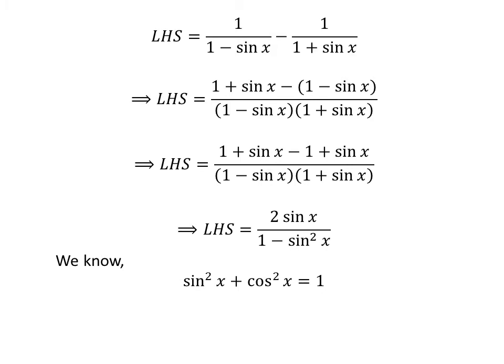As we know, sin²(x) plus cos²(x) is equal to 1. From this identity, we can deduce that 1 minus sin²(x) is equal to cos²(x). Thus, the left hand side of the identity is equal to 2 times sin(x) upon cos²(x).